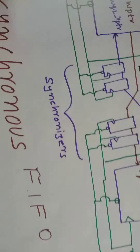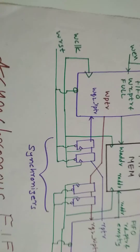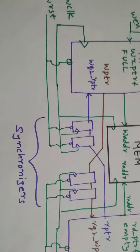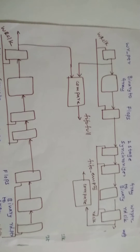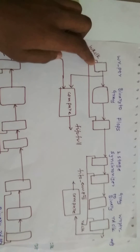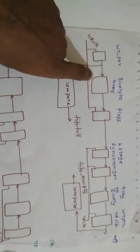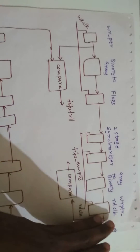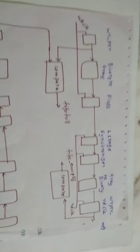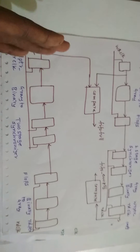So, to avoid false full and false empty, we are going to use binary-to-Grey converters. This is how the asynchronous FIFO architecture looks. We are going to take the write pointer, pass it through binary-to-Grey and two-flop synchronizers, then convert back from Grey-to-binary in the read clock domain. Then we compare the conditions to determine whether it's FIFO full or FIFO empty. Similarly with the read pointer in the write clock domain, we do the same thing.